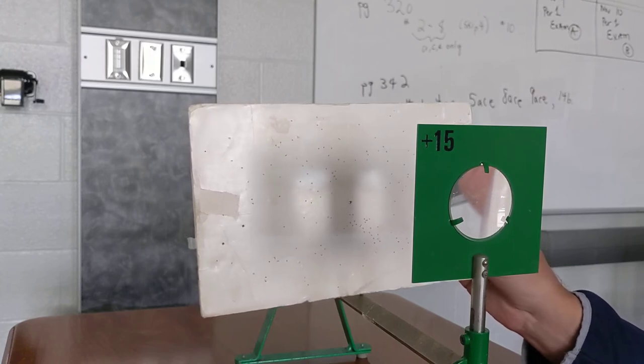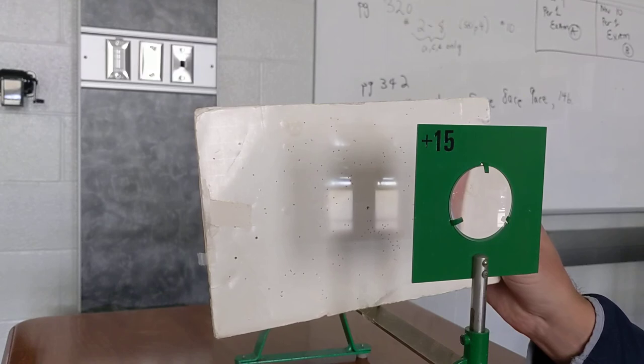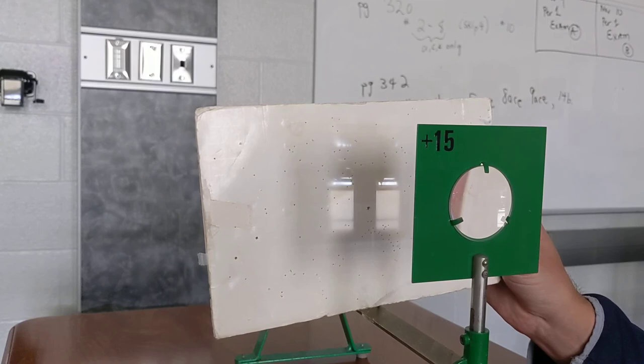However, when I move it close enough, about 15 centimeters away, you can see a clear image of the window on my screen. That image is coming through my lens, 15 centimeters away from the lens.